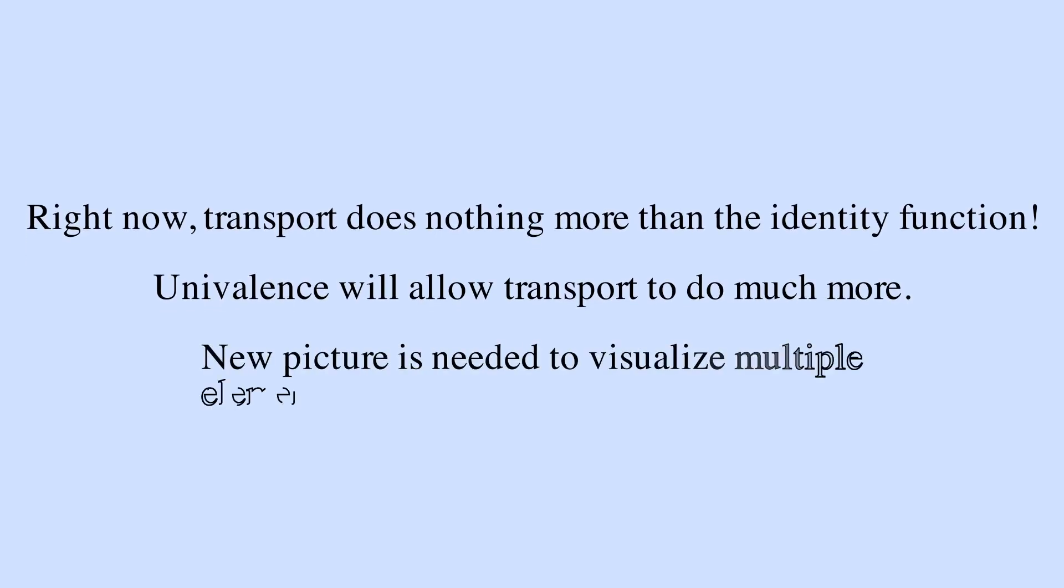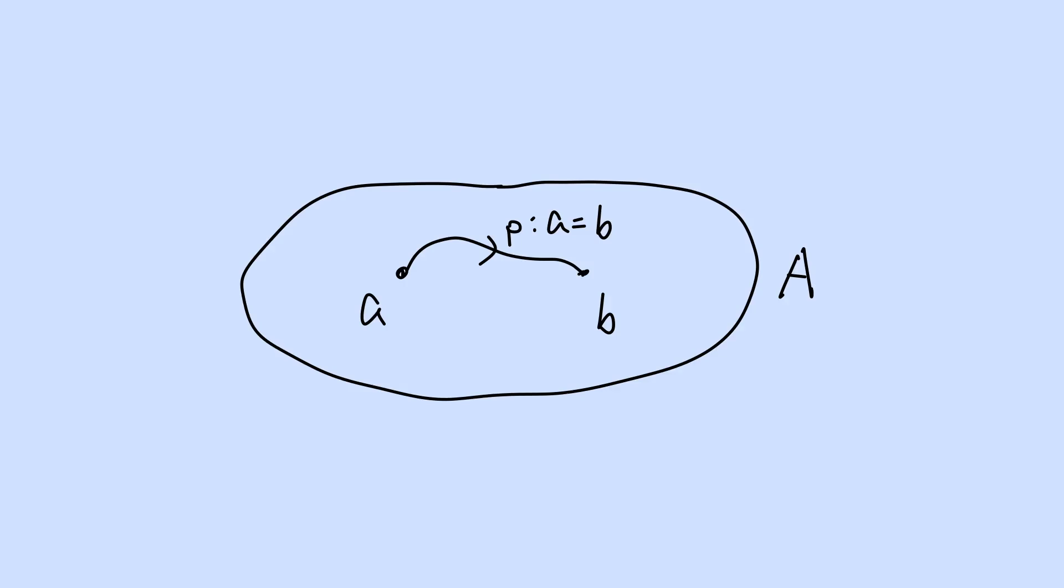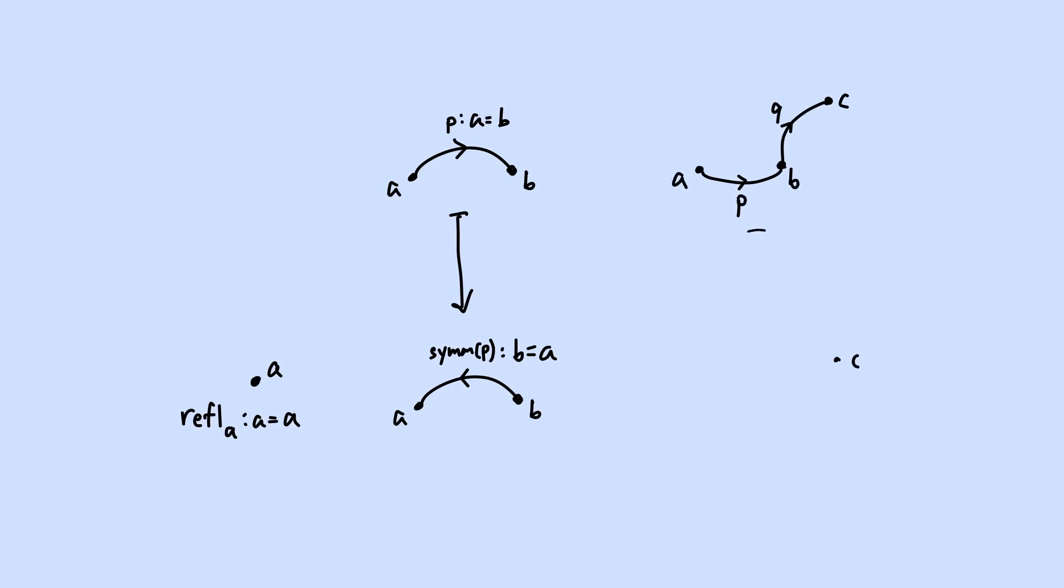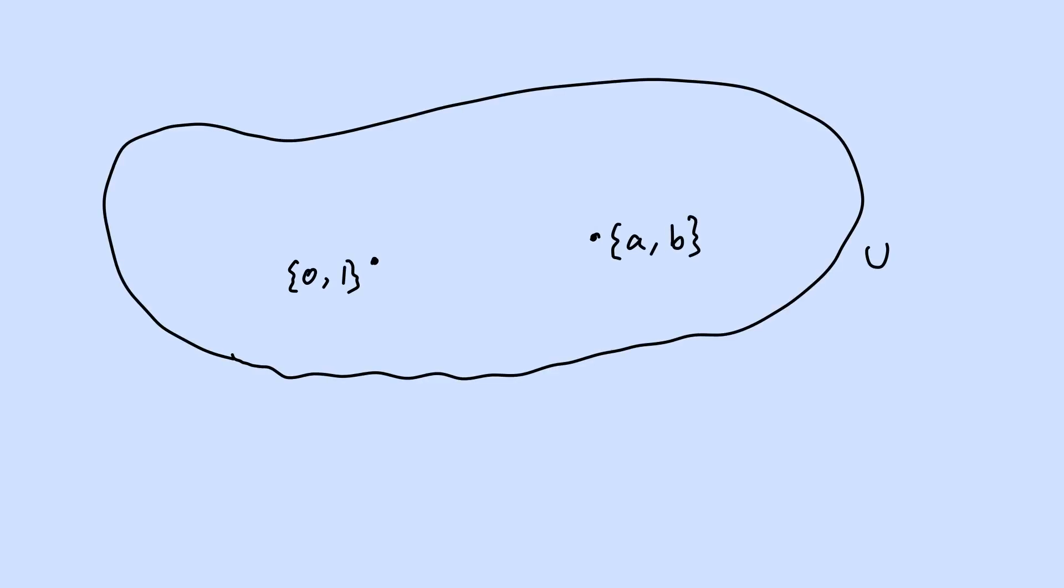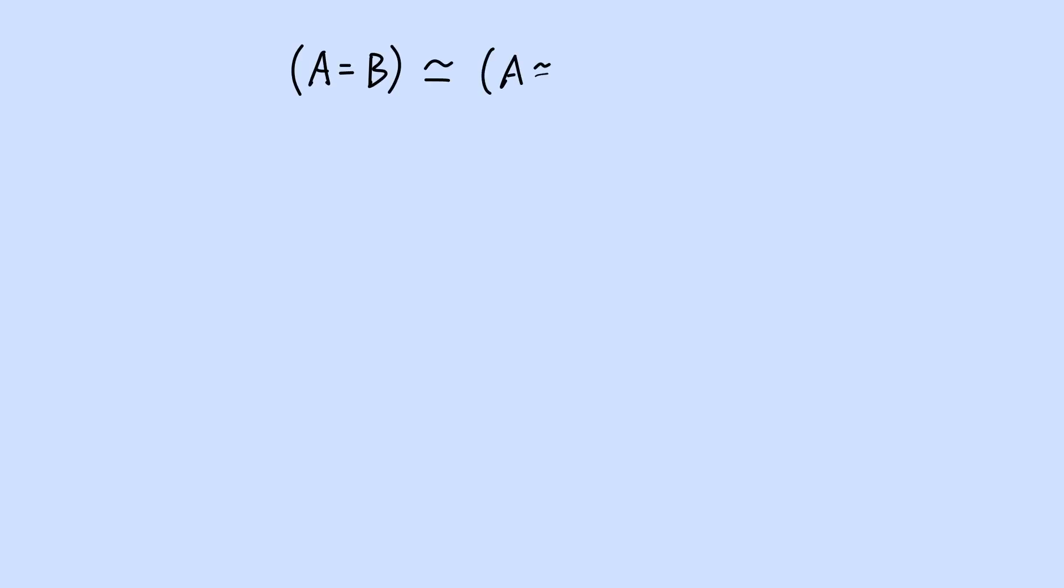For a new picture of the identity type that allows for more elements, we can imagine types as spaces, elements as points, and elements in identity type a equals b as paths from a to b. This picture is quite nice because reflexivity, symmetry, and transitivity can all be represented geometrically as the stationary path, path reversal, and path concatenation respectively. In assuming univalence, we can draw two paths from the set {0, 1} to the set {a, b}. However, having additional elements in the identity type is not without issues.